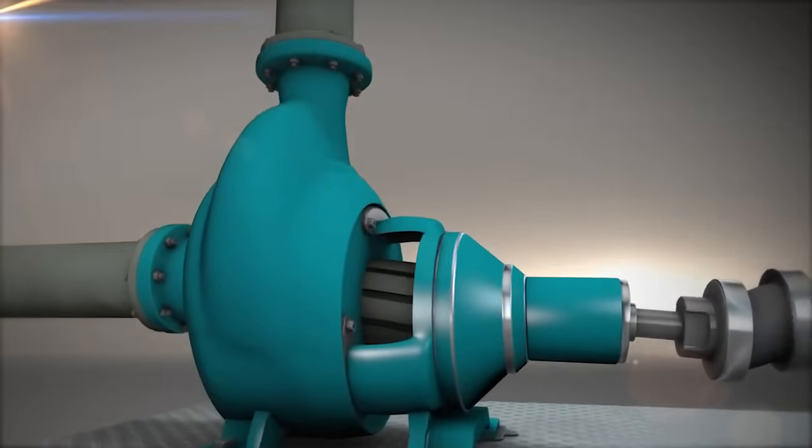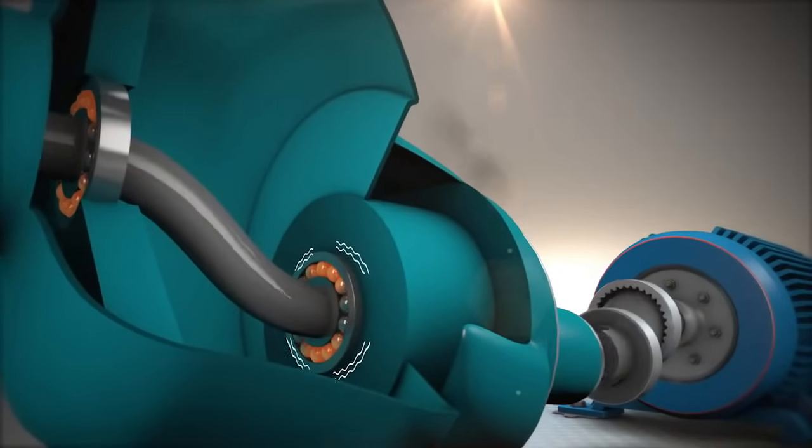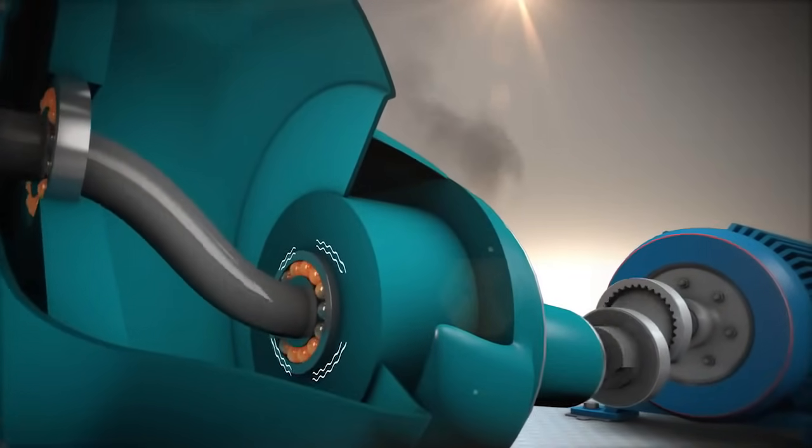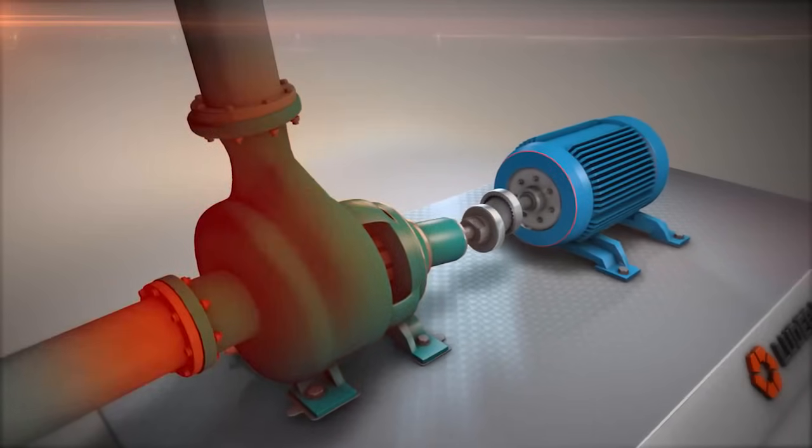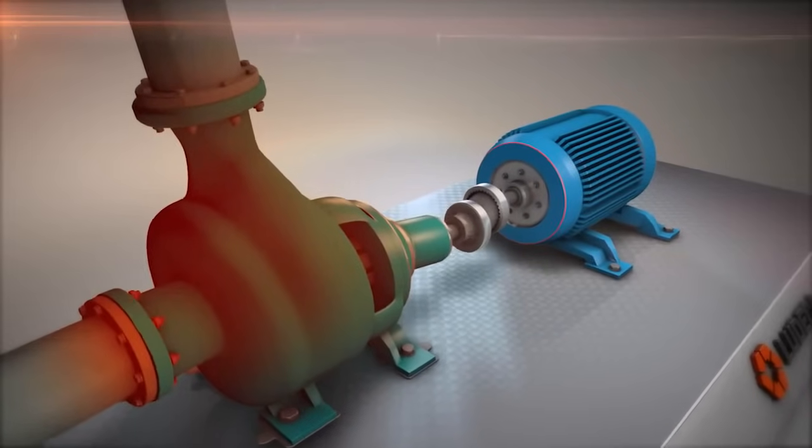The resulting deflection of the pump casing results in internal misalignment of the bearings, inducing vibration and premature failures. Sometimes it is thermal growth that causes pipe stress and the resulting strain, changing the alignment at the coupling.